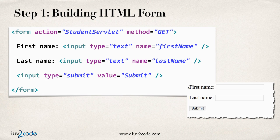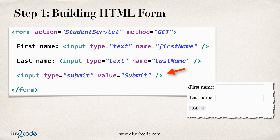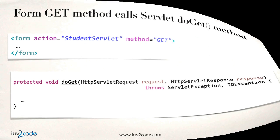Let's walk through this step by step. The first step is building the HTML form. We start off with our form and the action equals StudentServlet — that's the name of the servlet we're calling. Then we set method equals get because we want to make use of a GET request to that servlet. From there, we simply set up the HTML form fields: a first name field, a last name field, and a submit button. Just a basic form that we're setting up for our example.